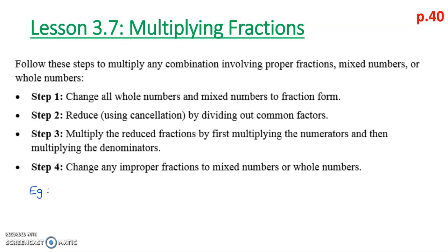The first example is the same as in your book. We take 4 sixths and multiply that by 3 fifths. Since these are already proper fractions, there's nothing to change. Looking across, we have 4 and 5 — we can't divide those by the same number, so we leave them. But on the other side, 6 and 3 can be cross-cancelled by dividing by 3. So 3 divided by 3 is 1, and 6 divided by 3 is 2.